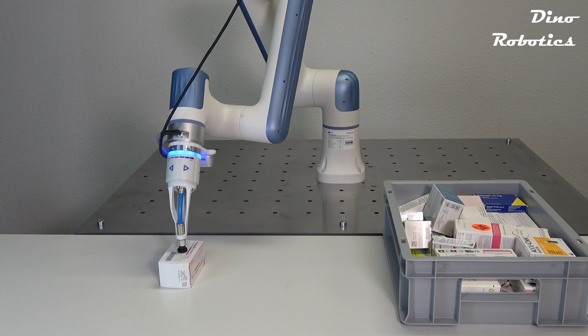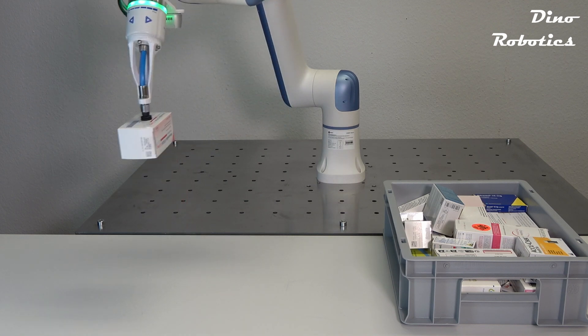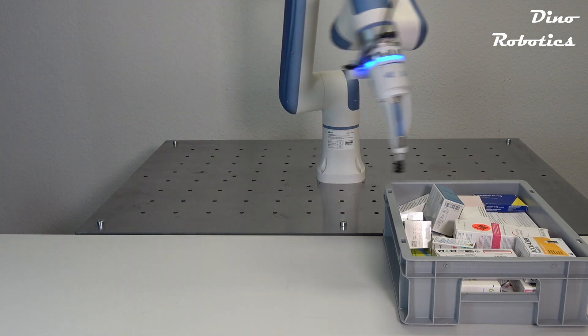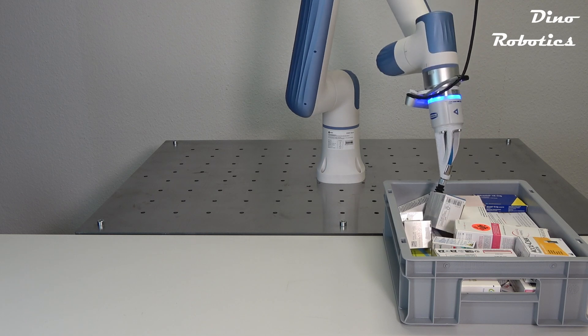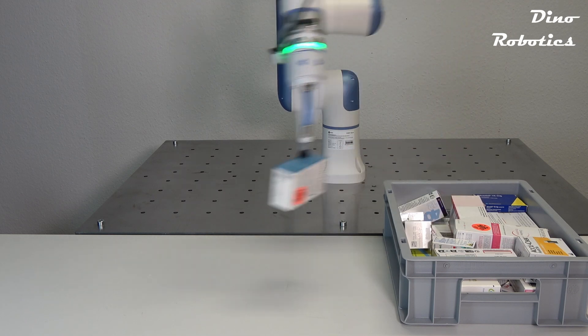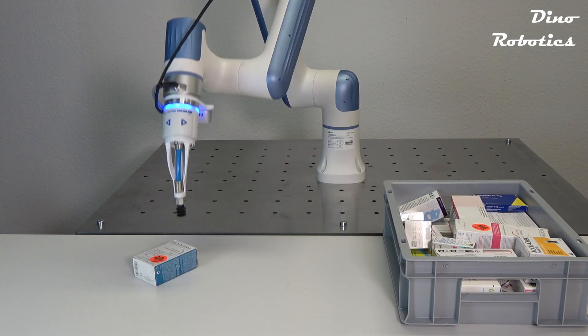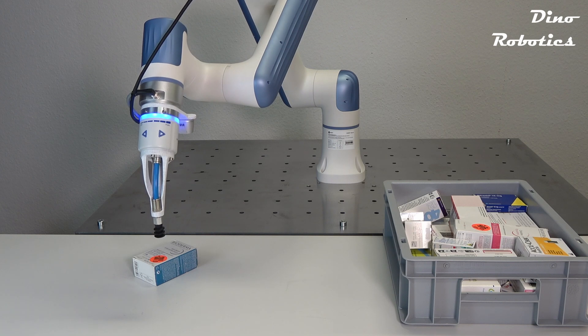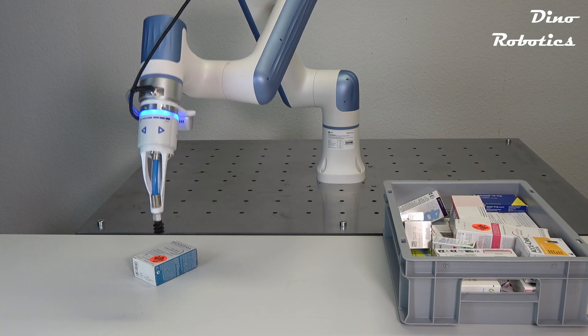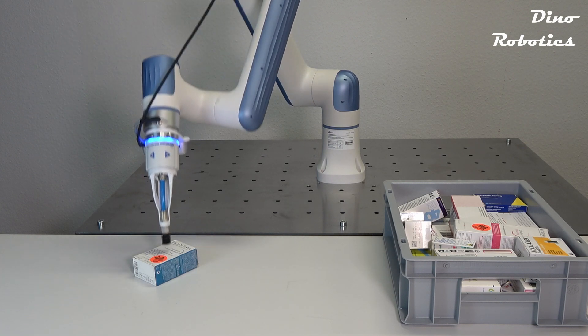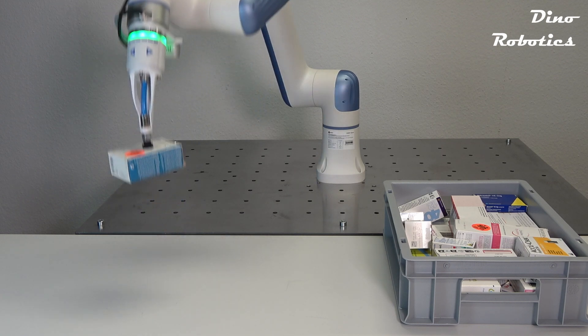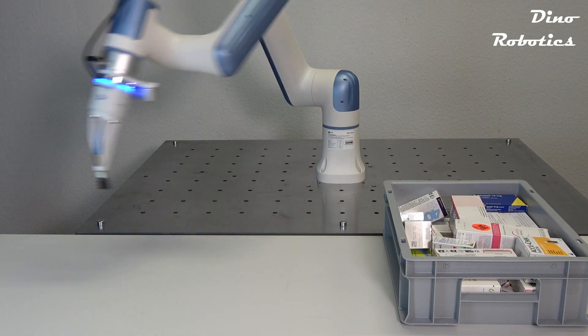RealSense D435 from Intel is used as a single 3D camera for localization and measurement. Schmalz's electrical vacuum generator, ECBPM, is designed for lightweight robots and cobots and features a compact electrical vacuum generator. Its interchangeable suction cups make it versatile for a wide range of applications, enabling the handling of airtight workpieces up to 3 kilograms.